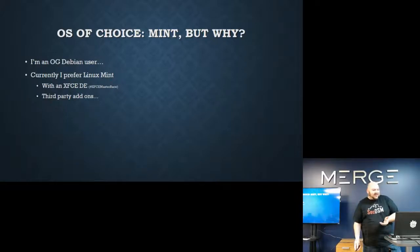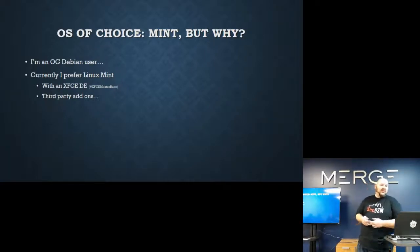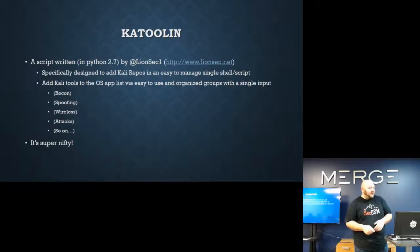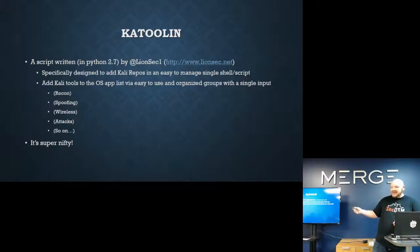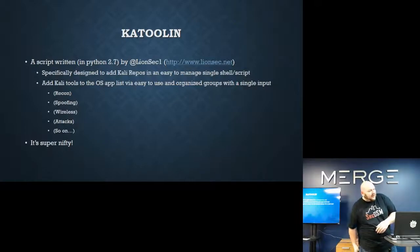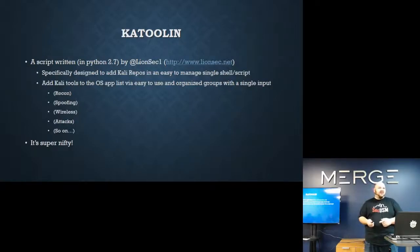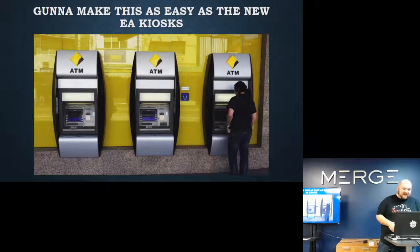The speaker's OS of choice is Linux Mint — he's an OG Debian user — running the XFCE desktop environment, mainly because of great third-party add-on support, so he can get NVIDIA drivers right out of the box. The specific tool being used today is Katoolin, a script written in Python 2.7 by LionSuck, hosted on GitHub. It's designed to rip the Kali repos so you can pull what you need, install it quickly, then ditch the repos and keep your OS running.